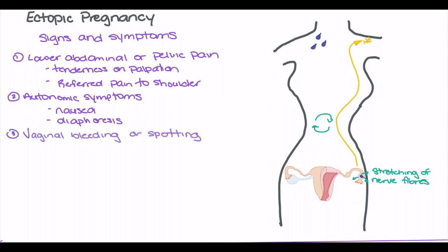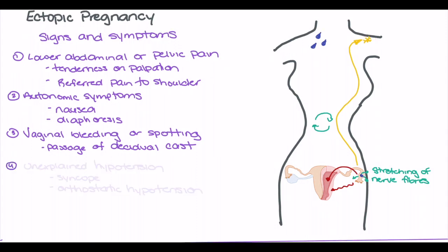Third, vaginal bleeding or spotting is commonly seen in patients with an ectopic pregnancy. This bleeding first occurs as the blastocyst implants into the lining of the fallopian tube and may increase when rupture occurs. If there is death of the blastocyst or zygote, the patient may also pass what's called a decidual cast. Fourth, these patients may present with unexplained hypotension. As the degree of vaginal bleeding does not necessarily relate to the severity of internal bleeding from rupture, patients may present with very little vaginal bleeding alongside hypotension, syncope, and orthostatic changes in blood pressure.